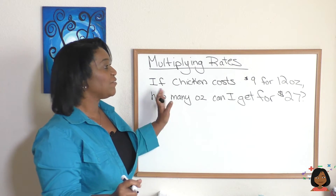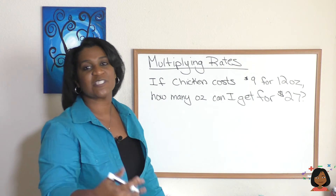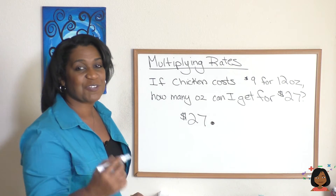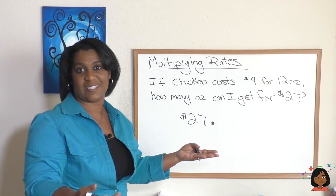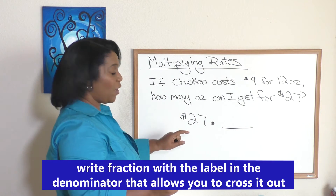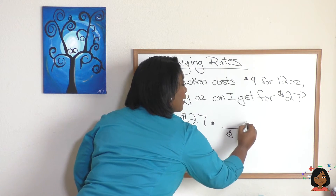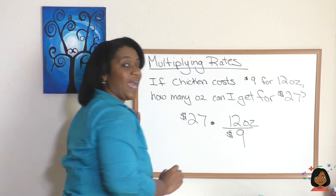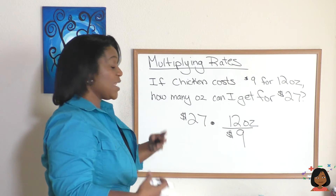Here's another example with a change: if chicken costs nine dollars for 12 ounces, how many ounces can I get for 27 dollars? We start by writing what we're looking for — 27 dollars — and multiply it times our rate. This time we want ounces as our answer, so we put dollars on the bottom and ounces on the top, filling in nine dollars for 12 ounces — the same rate but flipped upside down.